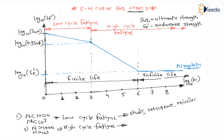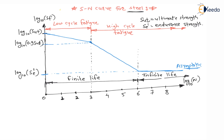For high cycle fatigue: failure of bearings, gears, springs — springs are under high cycle fatigue — and IC engines are under high cycle fatigue. Whenever a component fails in low cycle fatigue, that is before completing 10³ (1000) revolutions, it is considered low cycle fatigue failure.